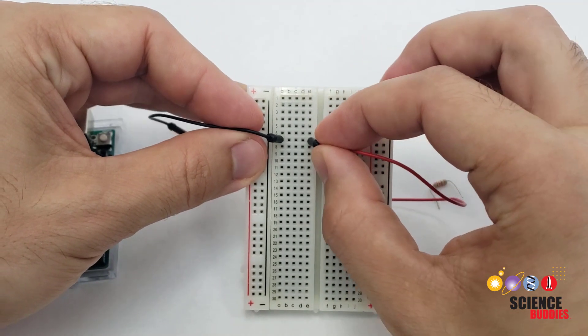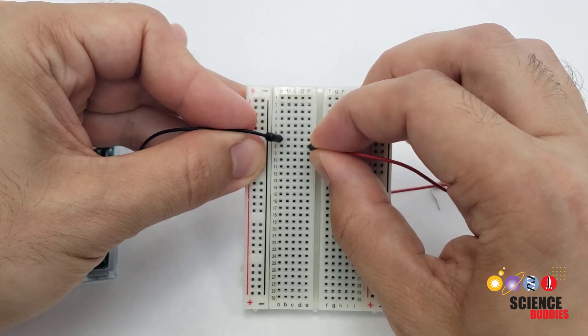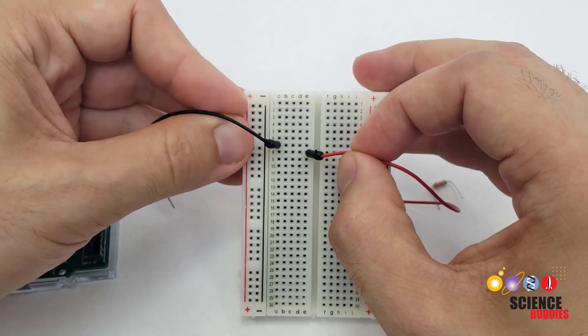Adjacent rows are not connected to each other. So, for example, if I move the red wire down to row 8, it is no longer connected to the black wire.